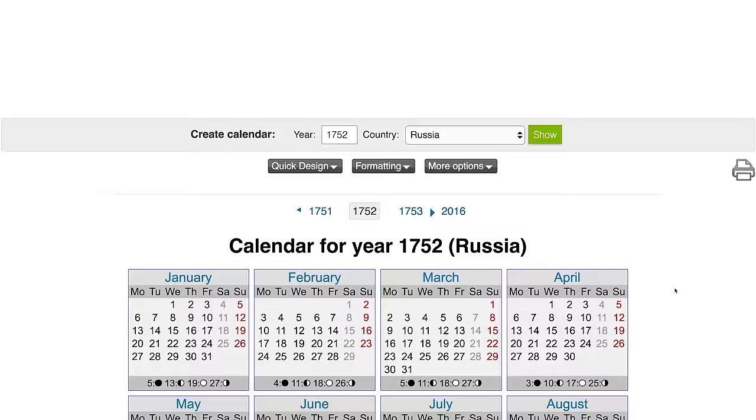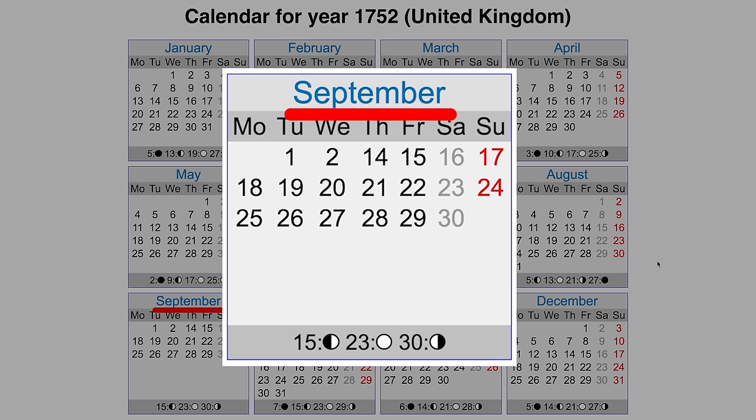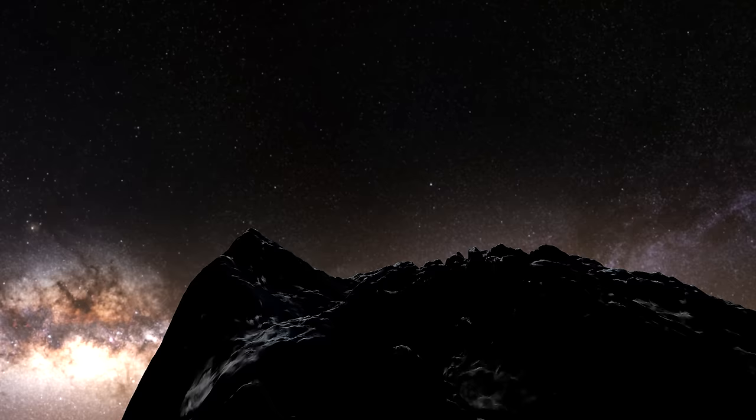In Russia, 1752 looked pretty normal. But check out what the British Empire was up to that year. Nothing really out of the ordinary except September. The second was followed by the 14th. Were 11 days just deleted? Where'd they go? What happened then? It is time to question time and how the Earth moves.